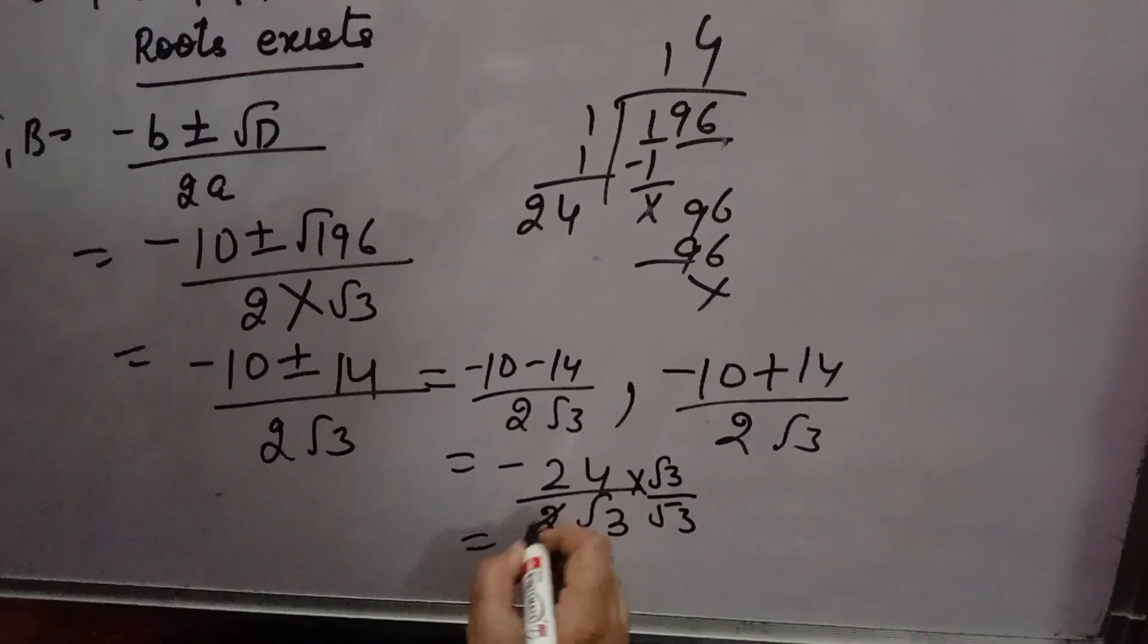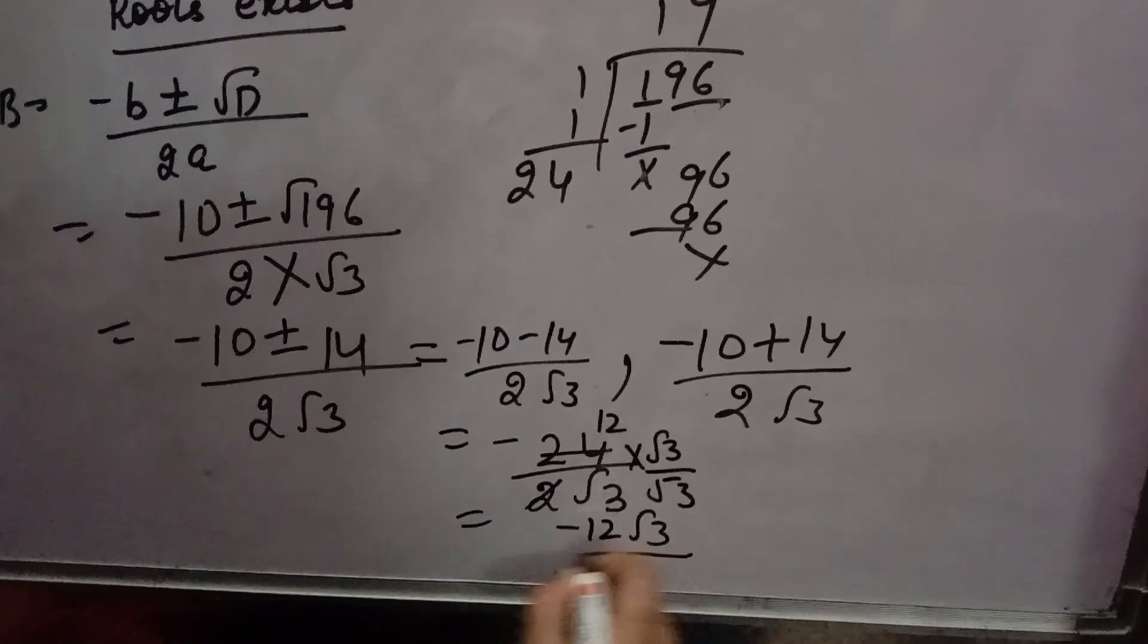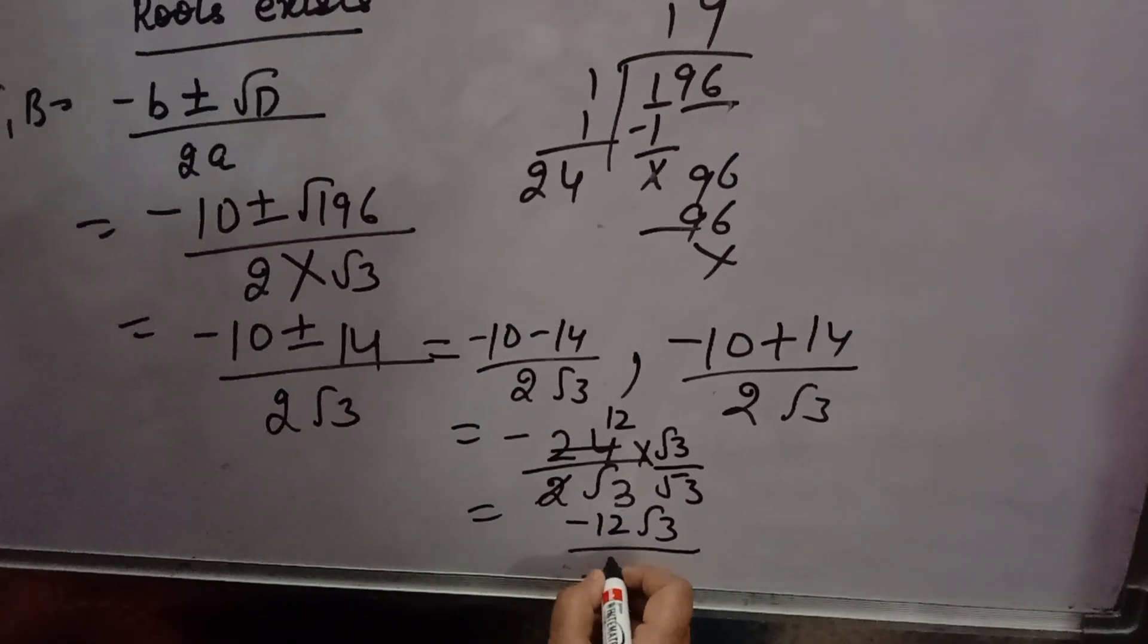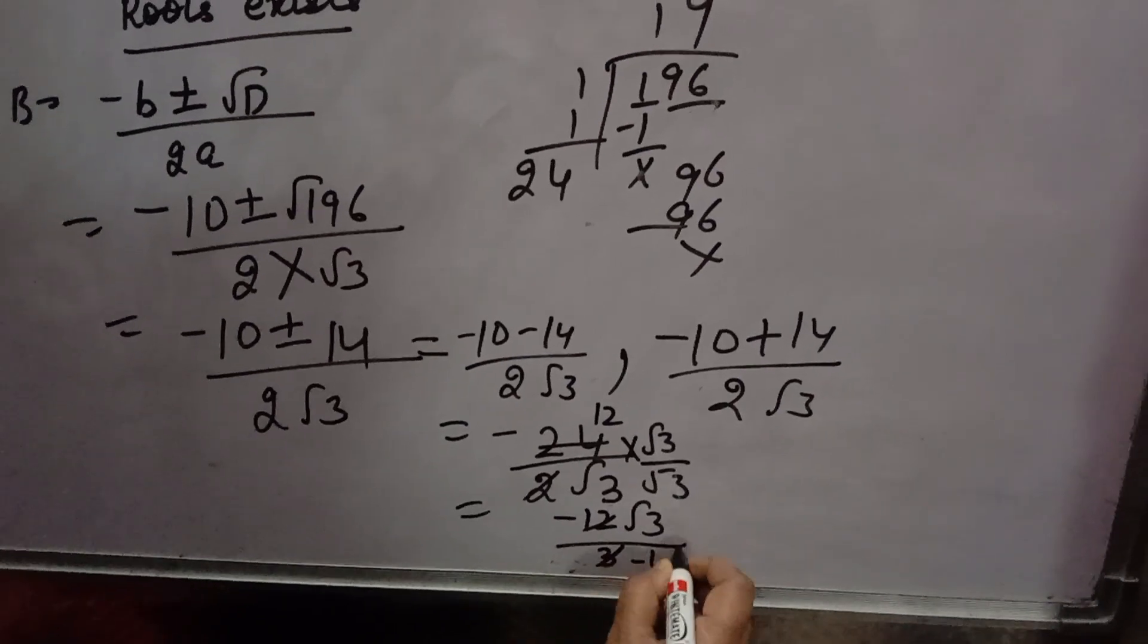Now, this you will cancel. Minus 12 root 3 over root 3 into root 3 is 3. It will cancel. So, you will get minus 4 root 3.